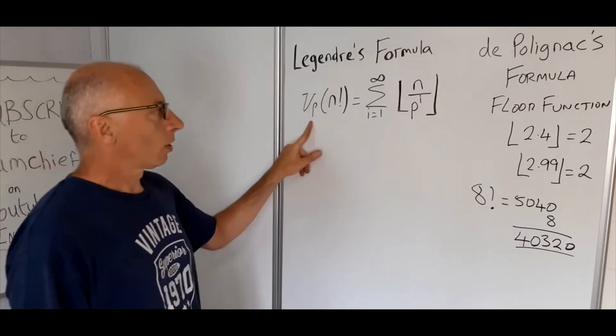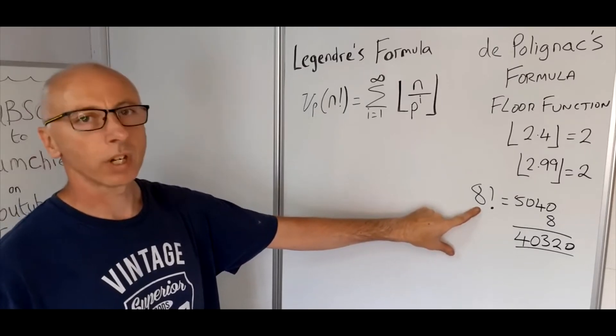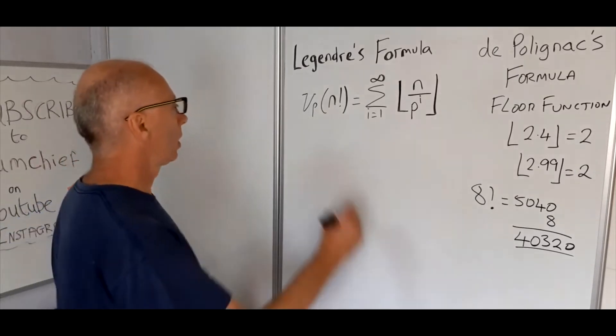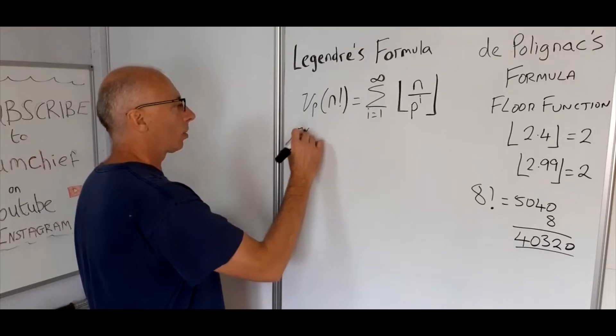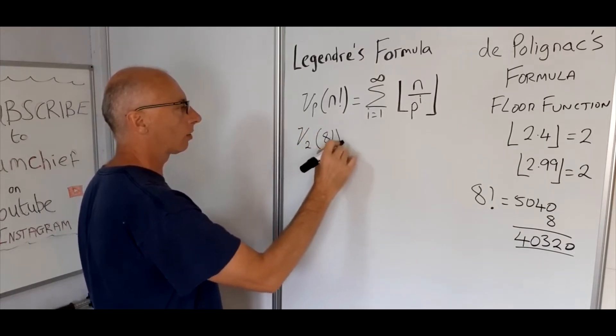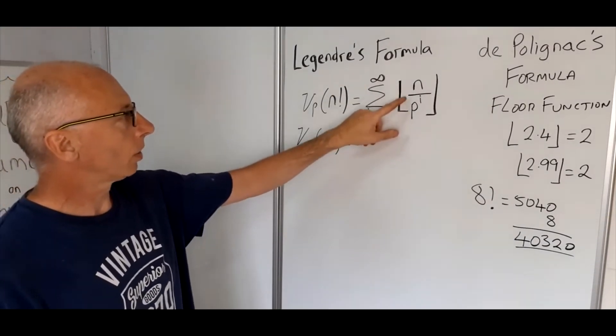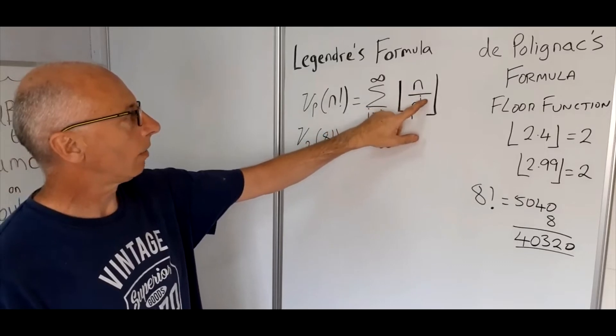So what we're going to do now is pick a prime number that is below 8. So let's try just 2 for now. So we're going to try for nu_2 of 8 factorial.